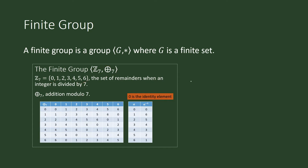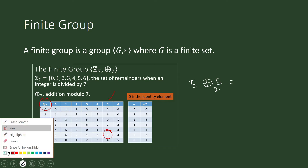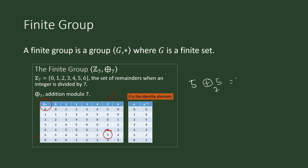For example, what is 5 plus 5 modulo 7? We can look for the result in the table. We go to their intersection and that is 3. Even without the table, we know it's equal to 3 because when we divide the sum of 5 and 5 by 7, it gives a remainder of 3.